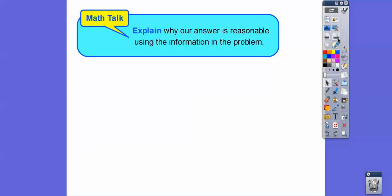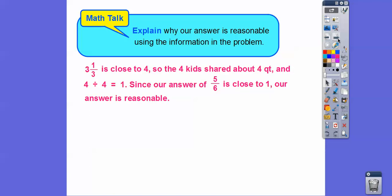Explain why our answer is reasonable using the information in the problem. Well, 3 and 1 third was close to 4, so 4 kids shared about 4 quarts. 4 divided by 4 was 1, and since our answer of 5 sixths is close to 1, the answer is a reasonable answer.